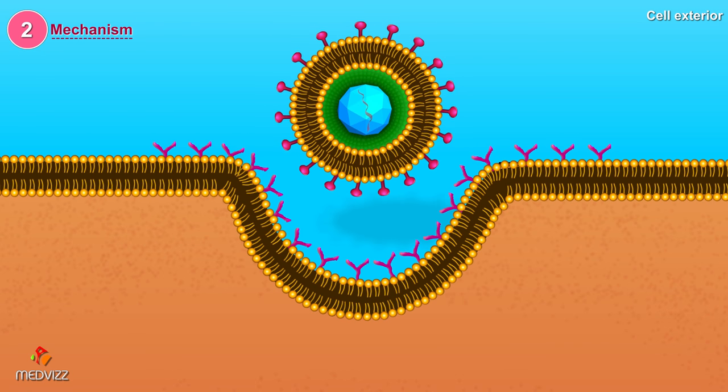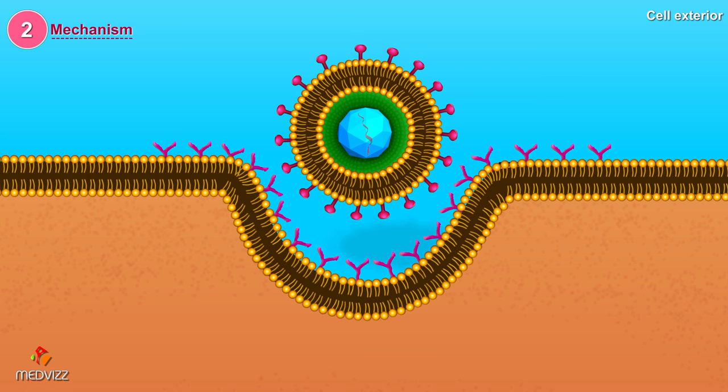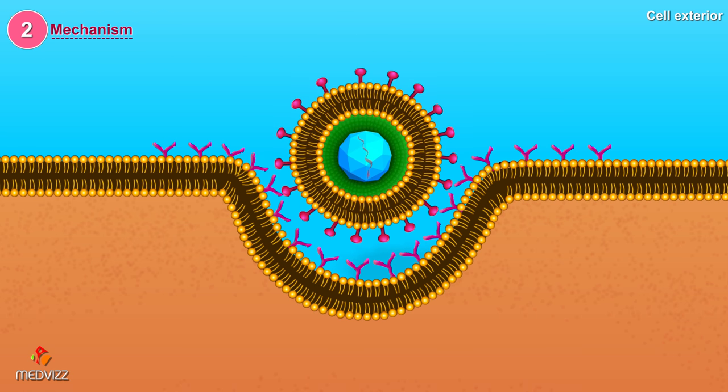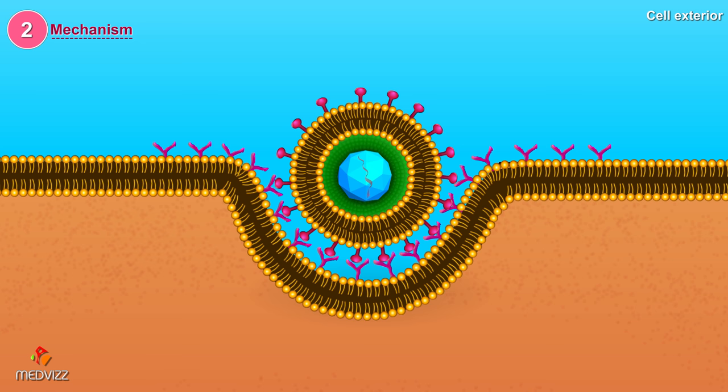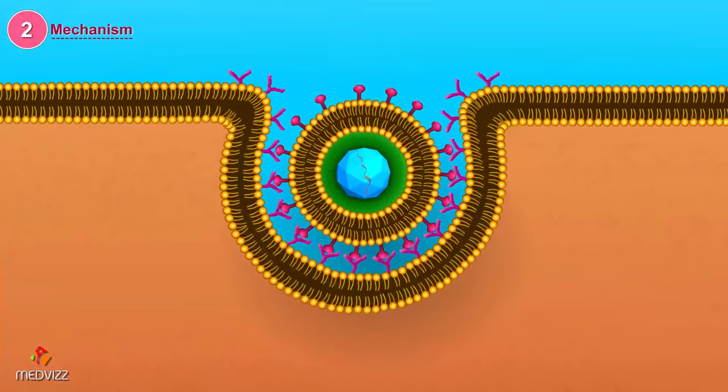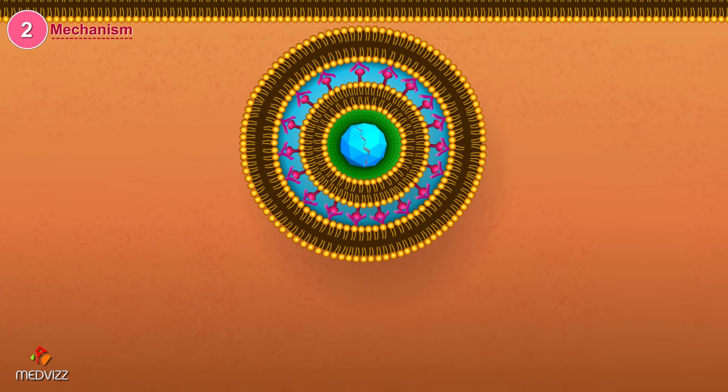In the second mechanism, the enveloped virus adsorbs to the host cell by specific proteins on its surface and the virion is taken in by endocytosis. In this process, the host cell plasma membrane surrounds the whole virion and forms a vesicle.